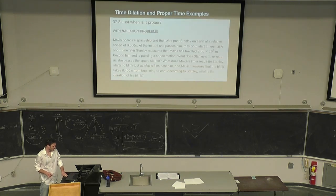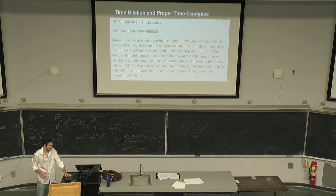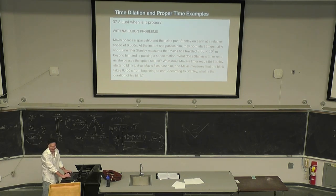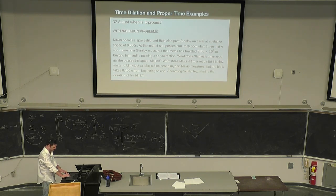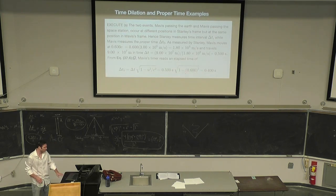Is this the final answer on time? Who knows — we haven't solved the problem of time and we don't have a quantum answer for it. But as far as we know, this is pretty good: we know that time is relative and it's been measured experimentally. So, Mavis boards a spaceship and zips past Stanley on Earth at 0.6 times the speed of light. At the instant she passes him they both start timers. Stanley measures that Mavis has traveled 9 times 10 to the 7 meters beyond him and is passing a space station. What does Stanley's timer read? What does Mavis' timer read? And for part B, Stanley starts to blink just as Mavis flies past, and Mavis measures the blink takes 0.4 seconds. According to Stanley, what is the duration of his blink?